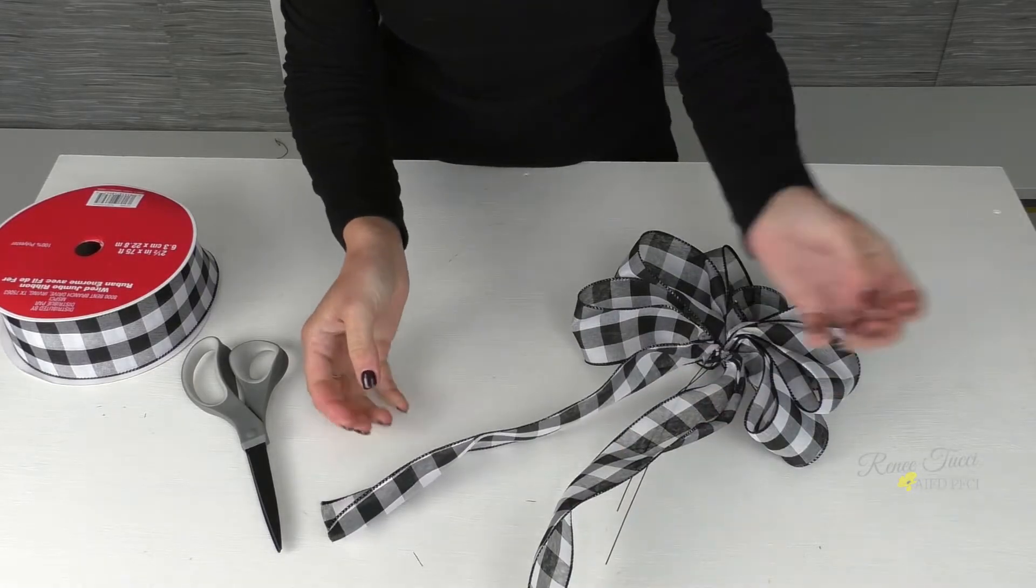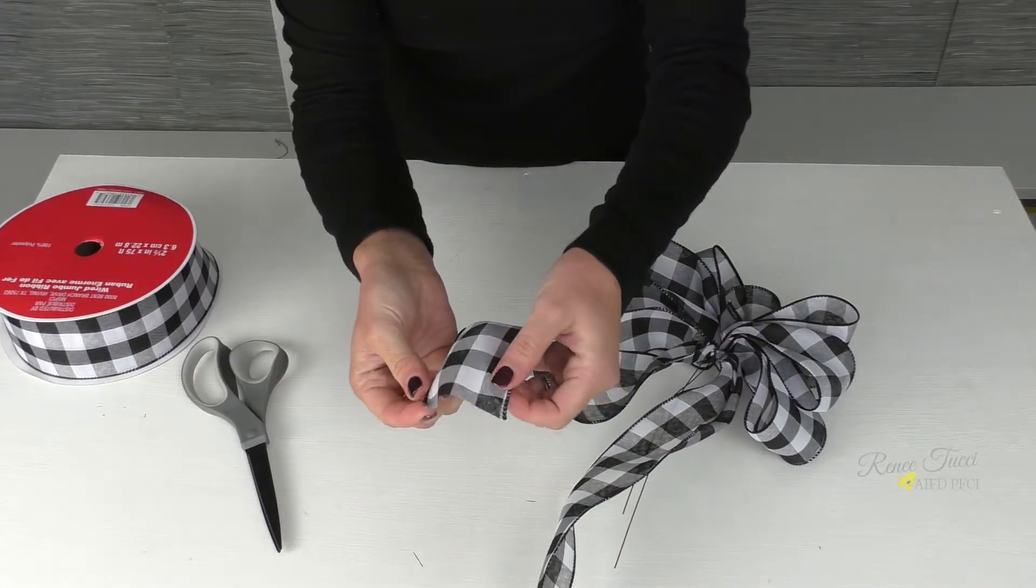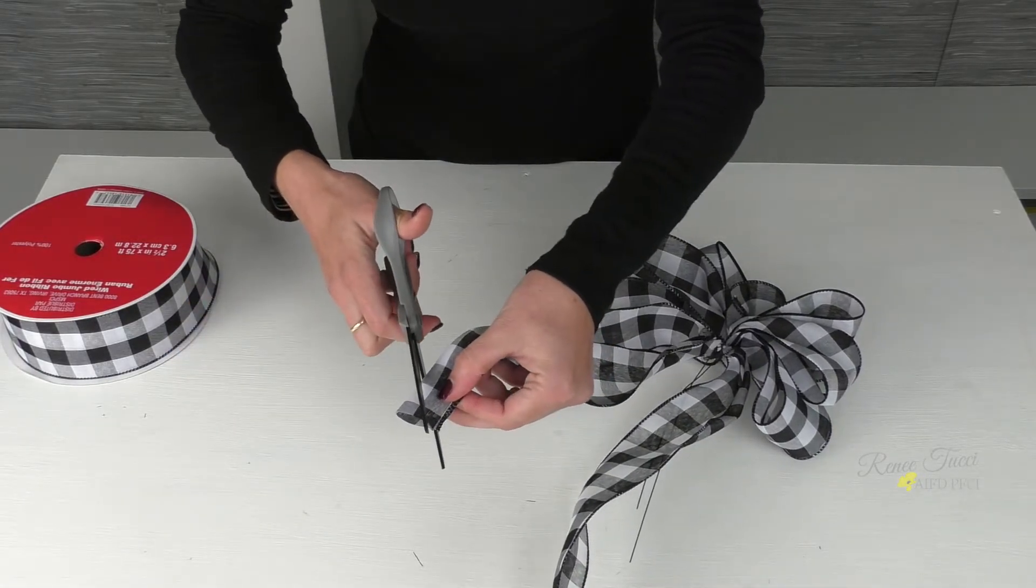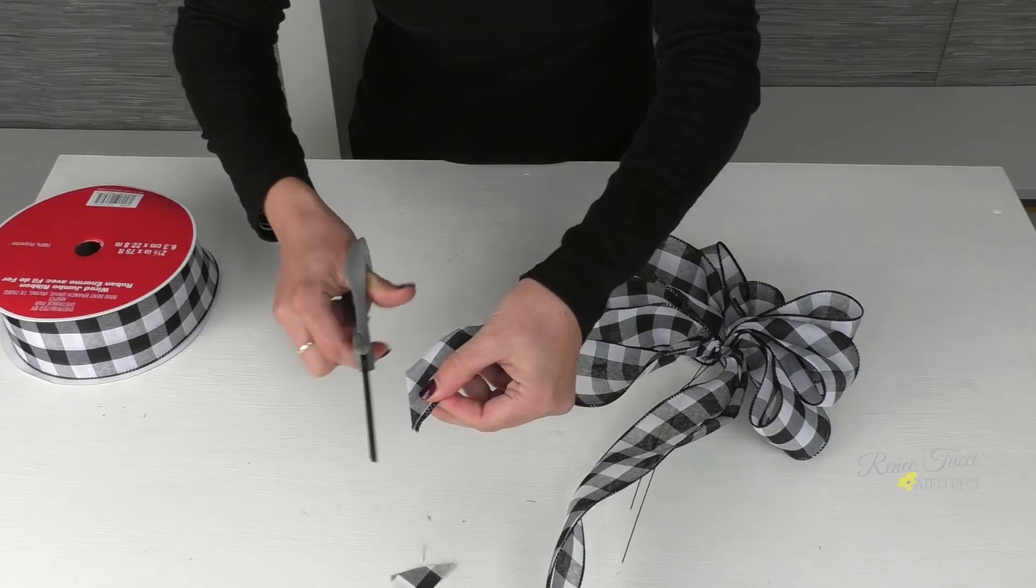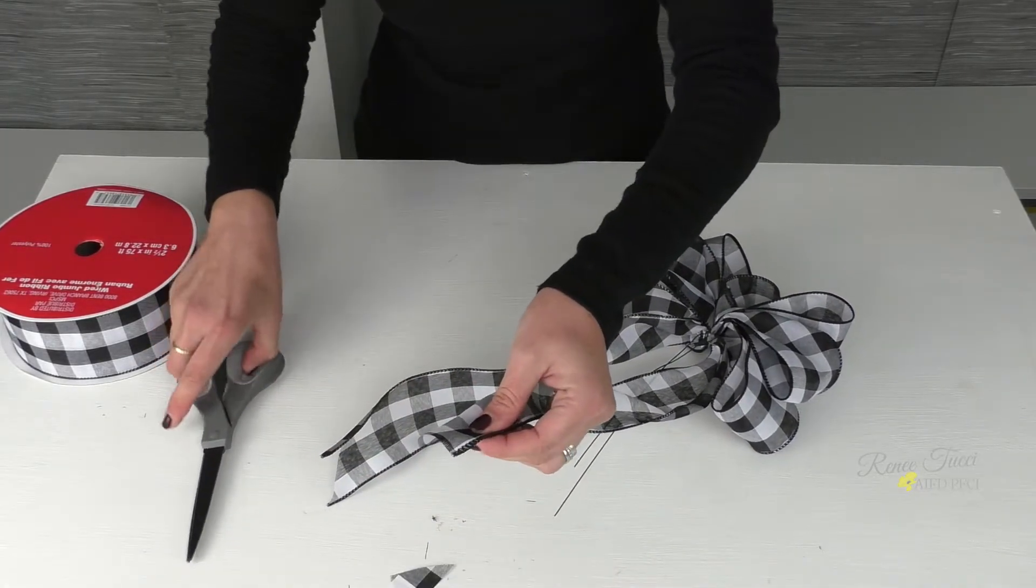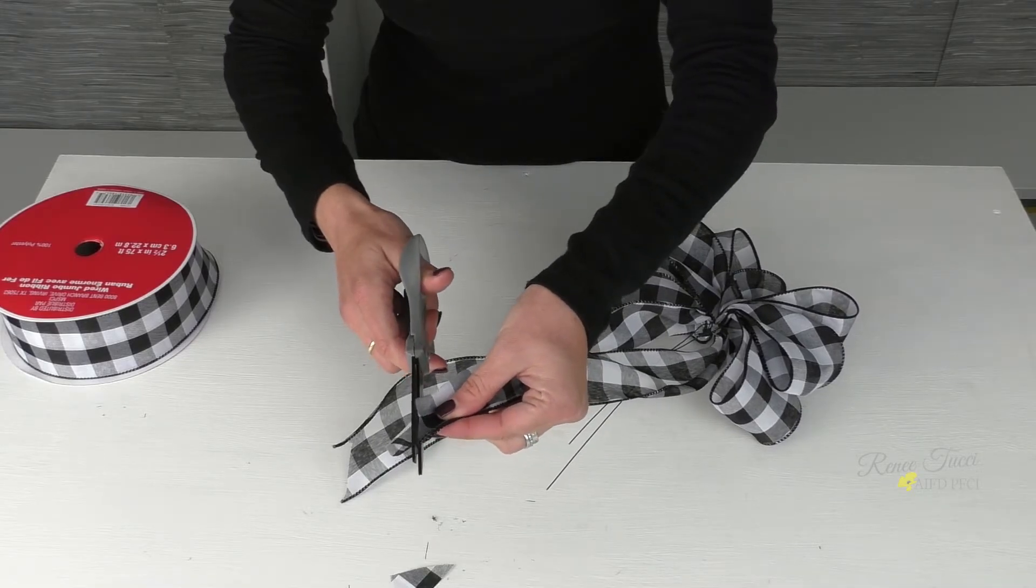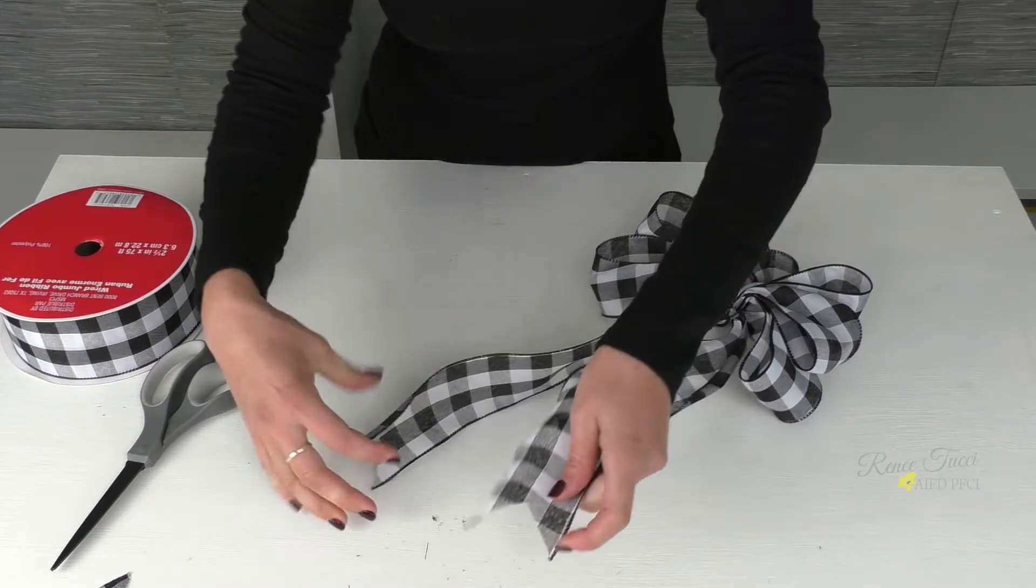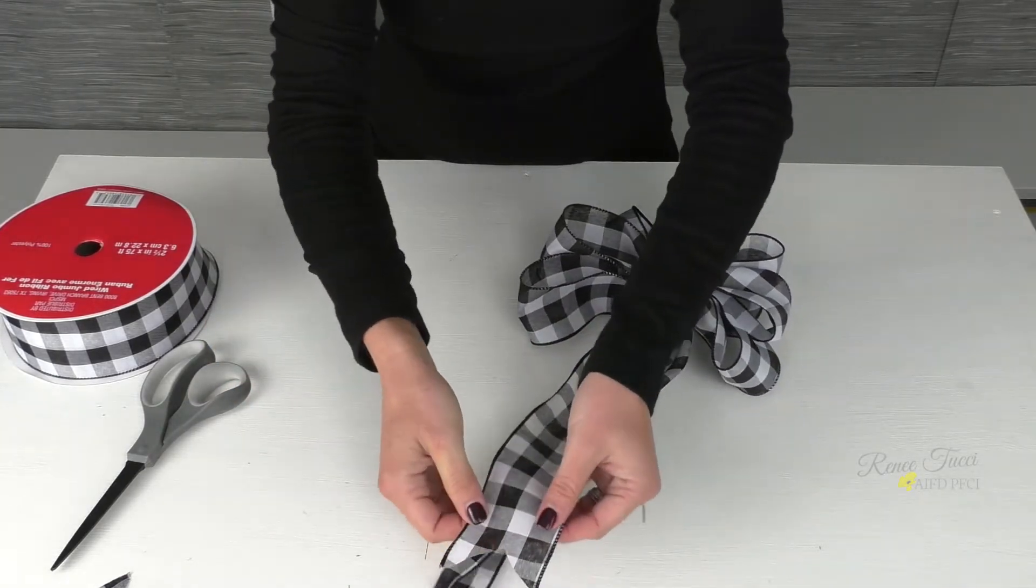There you go. If you'd like, you could dovetail those by taking your ribbon and folding it in half, and then trim from the center down. And we'll do that to both sides. And that gives a nice finished tail appearance.